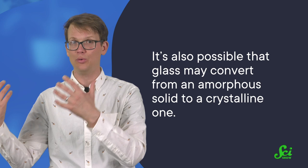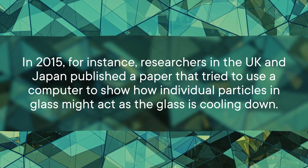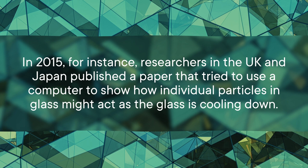So the exact nature of glass is still hotly debated. There are multiple definitions for what glass is, including some that do call it a kind of liquid. And there is not a single simple answer that explains why glass happens. The good news is that scientists are investigating the question. In 2015, for instance, researchers in the UK and Japan published a paper that tried to use a computer to show how individual particles in glass might act as the glass is cooling down.